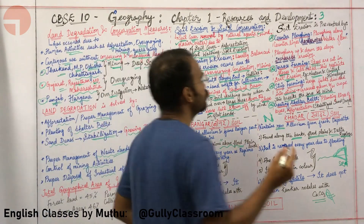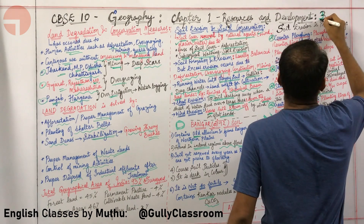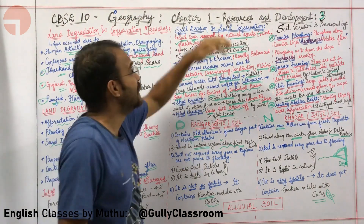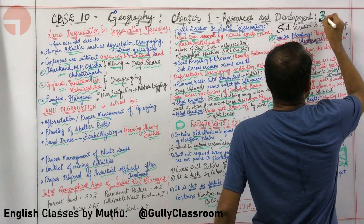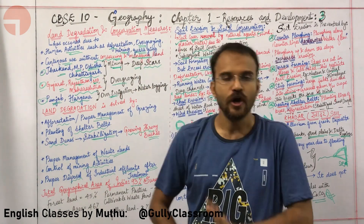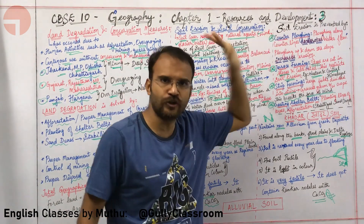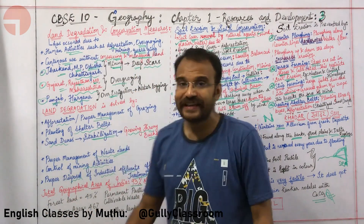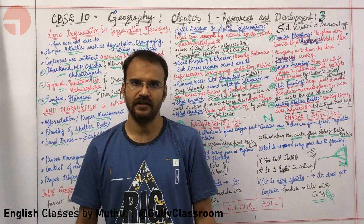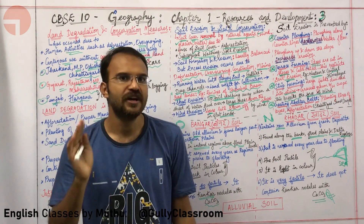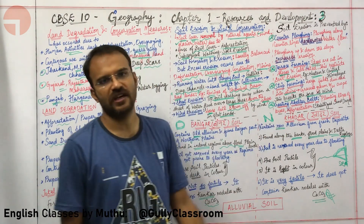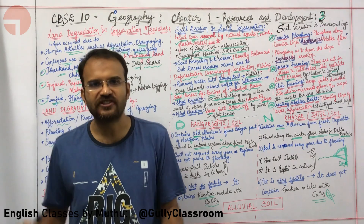Welcome to Gully Classroom. This is the third lecture of the unit Resources and Development in CBSE 10th Standard Geography Chapter 1. In this lecture, we will learn about land degradation and how to conserve it, soil erosion and how to prevent it, and the two types of alluvial soil: Bangar soil and Khadar soil.